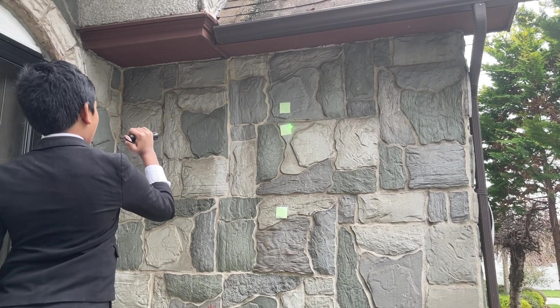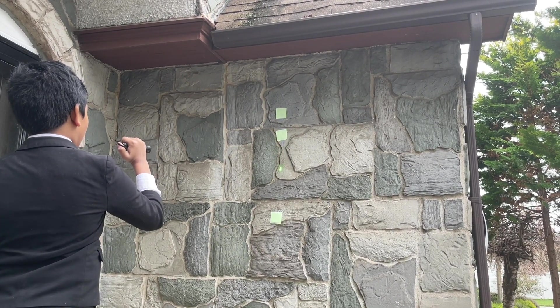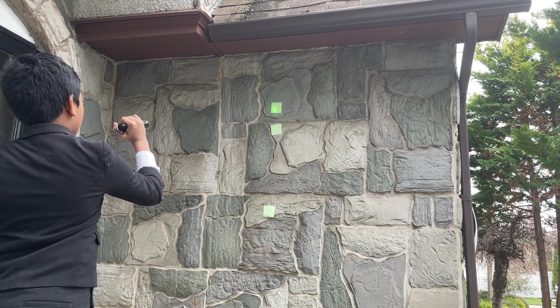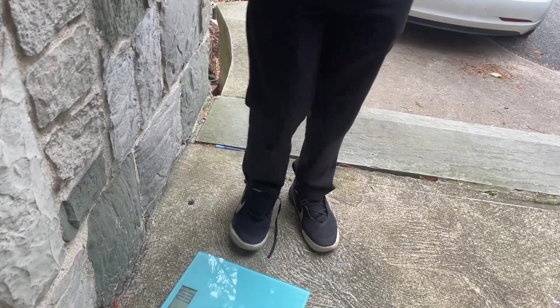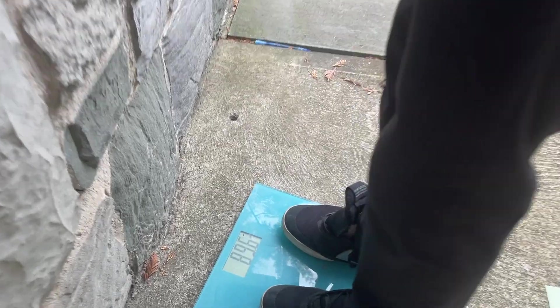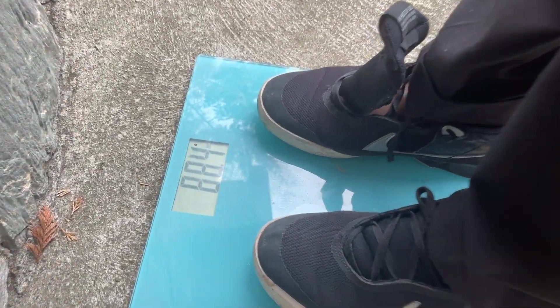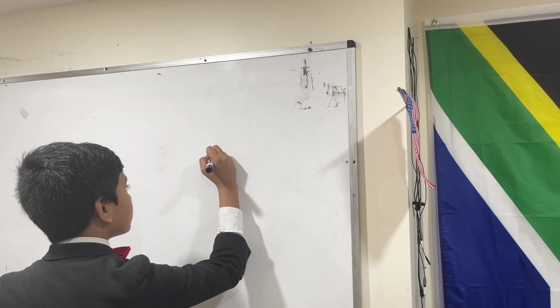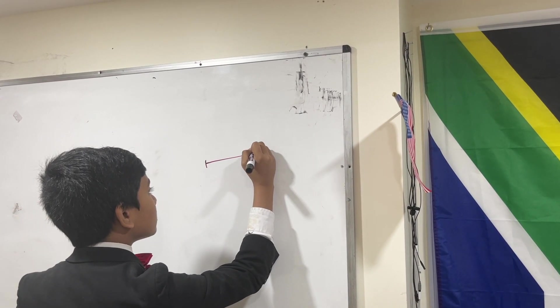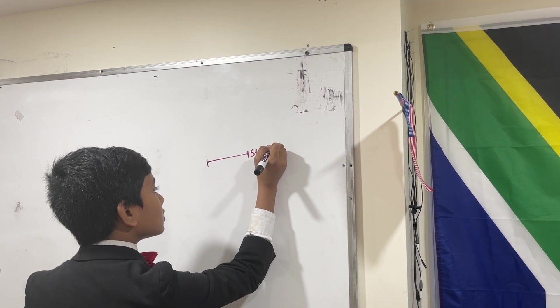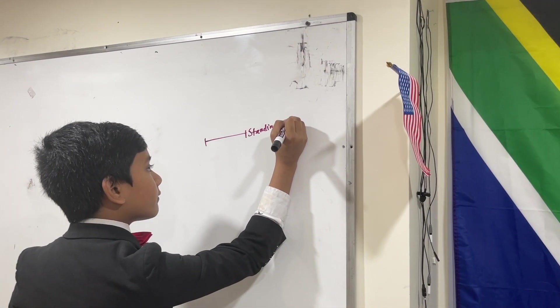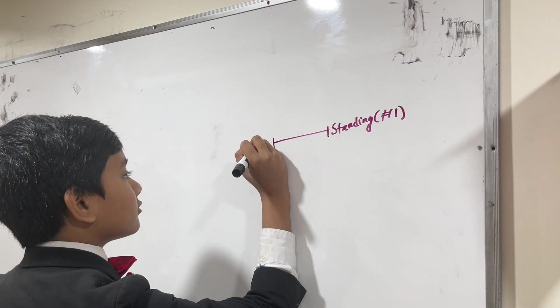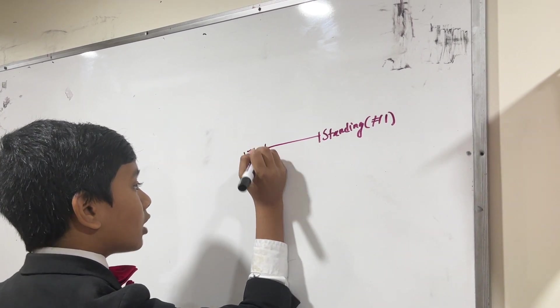Now we have step number one right over there, then step number two right over there. Finally, step number three right over there. So let's measure my weight here. Because of my added clothes, it's 88.4. The standing measurement was 179 centimeters off of the ground.